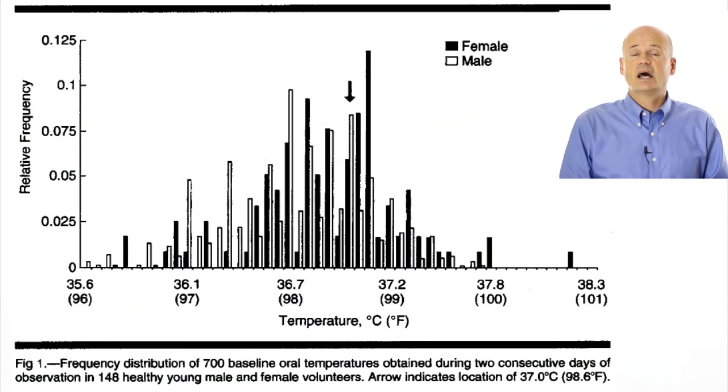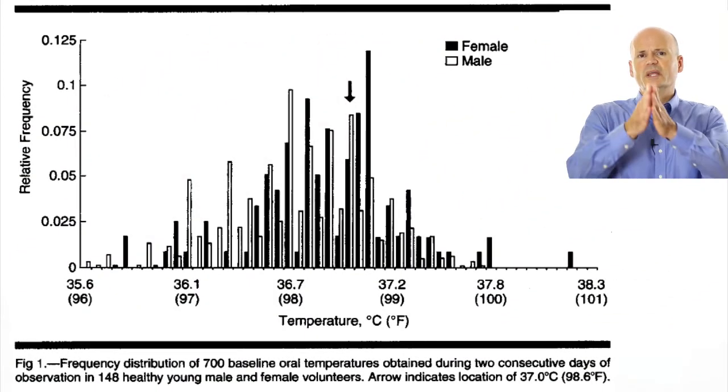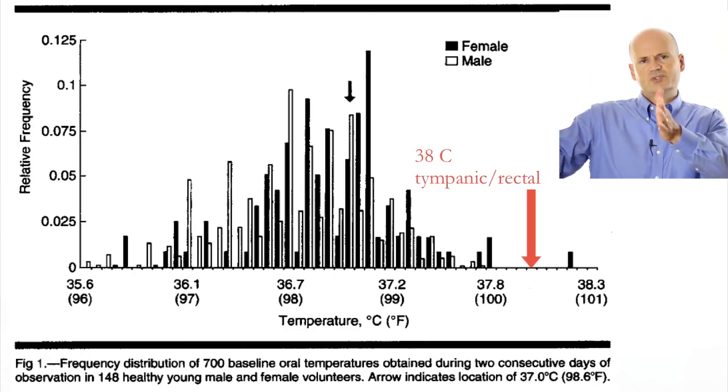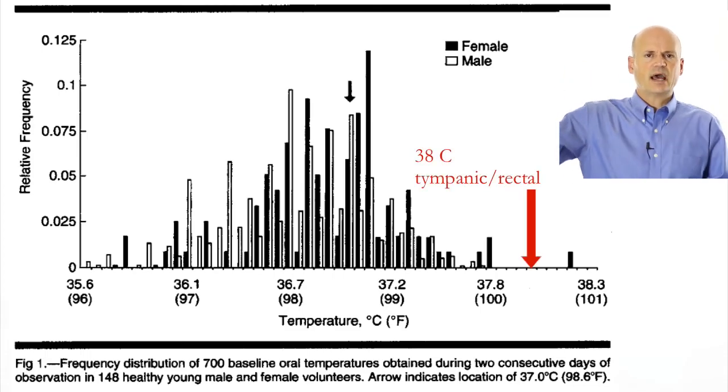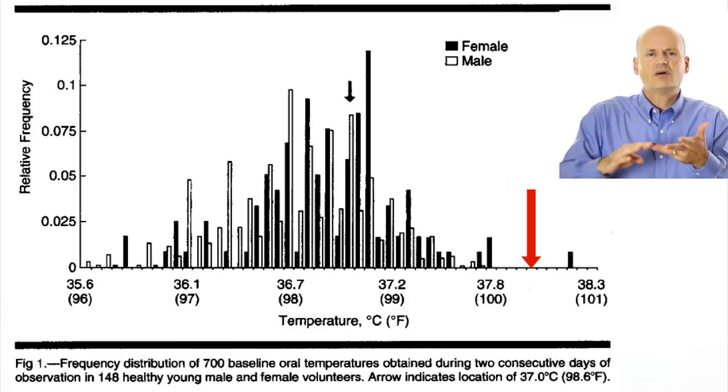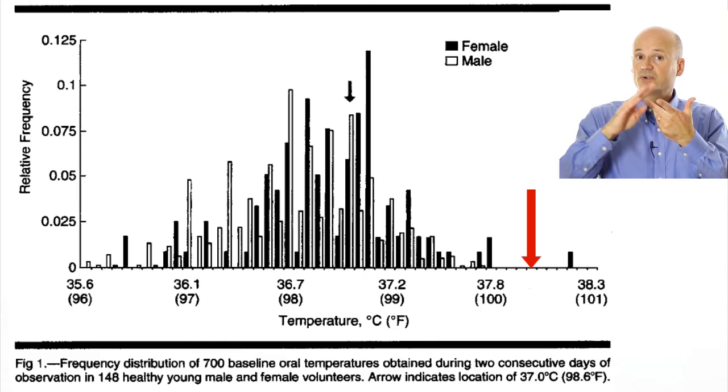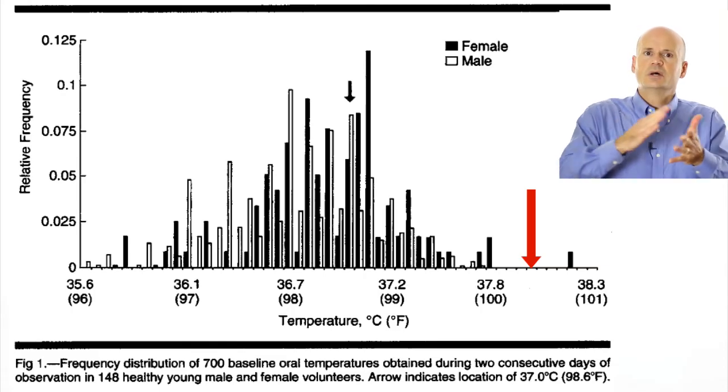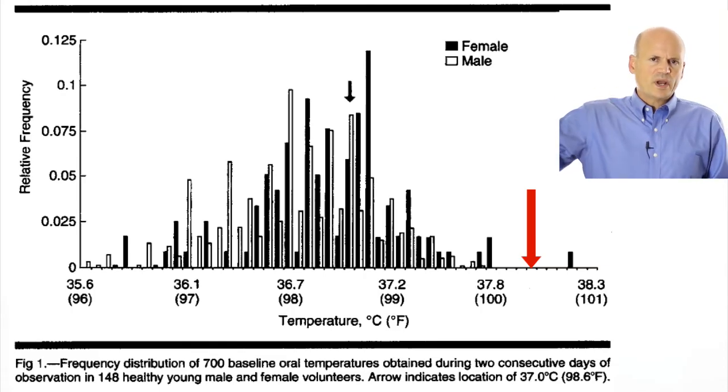So in summary, temperature, like many human measurements, falls along a normal distribution. And when we decide what to call a fever, we're really just taking two standard deviations away from the mean and establishing a cut point. But because temperature can vary based on sex and activity level and maybe the medication you're taking and certainly the time of day and your age, well, that cutoff point isn't perfect.